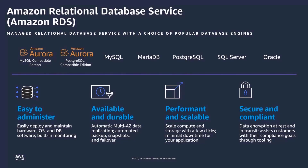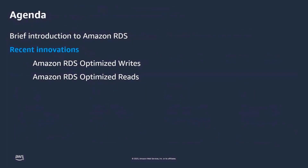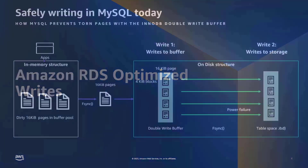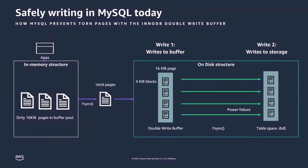With that, let's move to the two features we're going to talk about today: Amazon RDS Optimized Writes and Optimized Reads. The first thing we're going to talk about is Amazon RDS Optimized Writes. But before we get into Optimized Writes, let's talk about how writes happen in MySQL today.